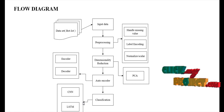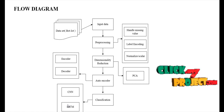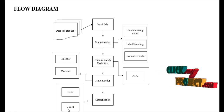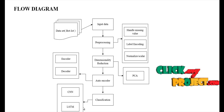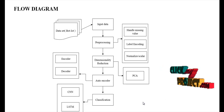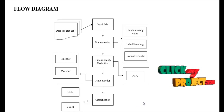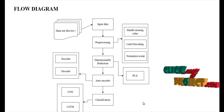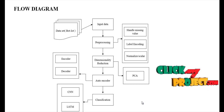After the autoencoder, we implement the classification algorithms — two deep learning algorithms: Convolutional Neural Network (CNN) and Long Short-Term Memory (LSTM). The final results show performance metrics like accuracy, precision, recall, and confusion matrix. This completes the flow diagram.